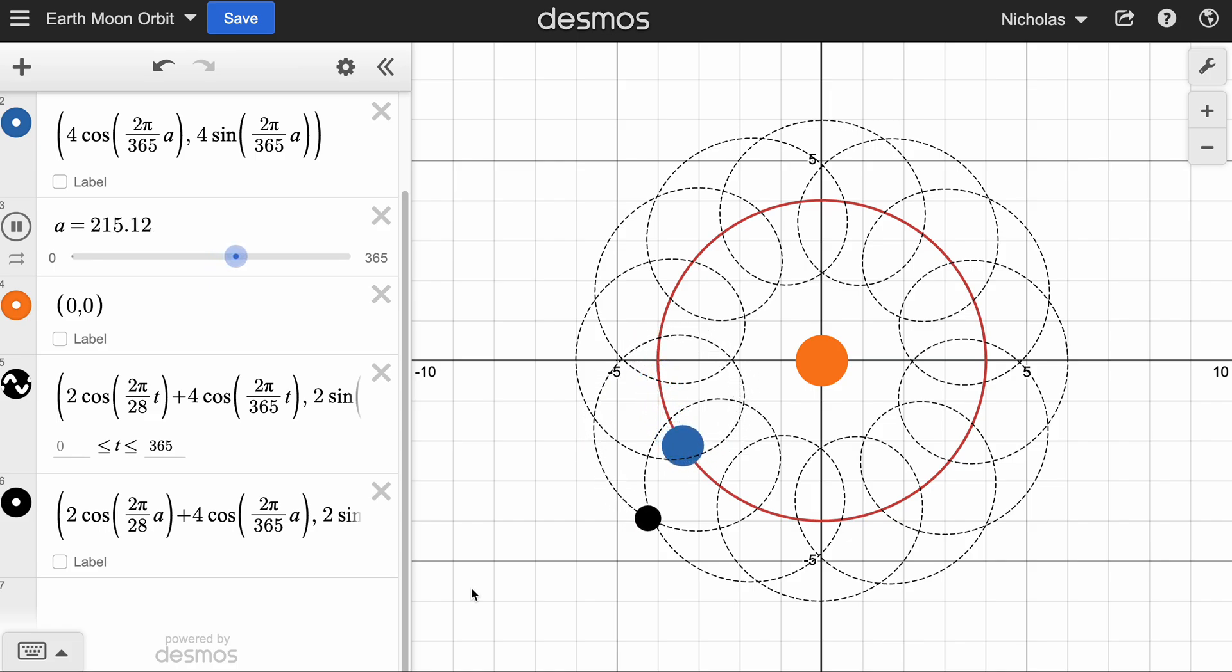And we get this really interesting spiral pattern just based on the, I guess you could say the period of the Earth going around the Sun and the period of the Moon going around the Earth. And if you were to change that, you would get different spiral patterns.